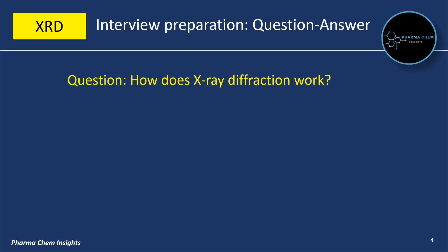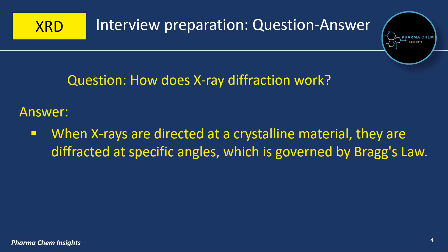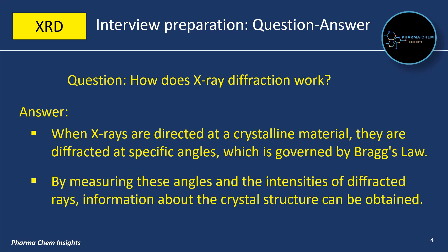Next question: how does X-ray diffraction work? When X-rays are directed at a crystalline material, they are diffracted at specific angles, which is governed by Bragg's law. By measuring these angles and the intensities of diffracted rays, information about the crystal structure can be obtained.